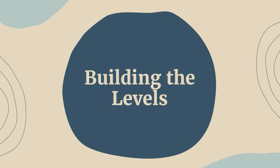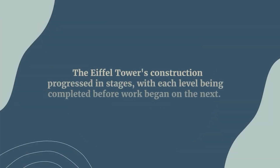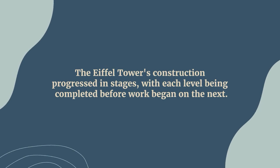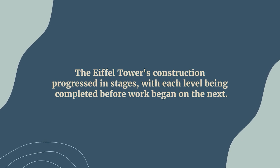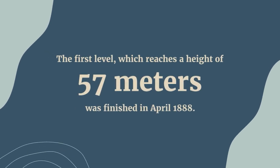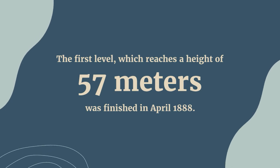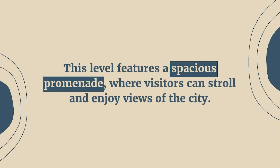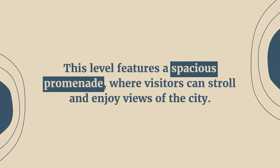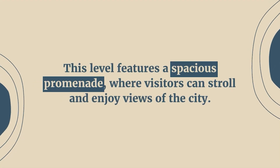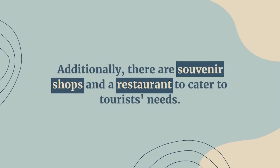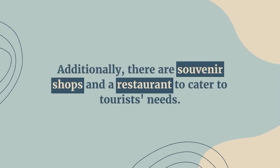Building the levels: The Eiffel Tower's construction progressed in stages, with each level being completed before work began on the next. The first level, which reaches a height of 57 meters, was finished in April 1888. This level features a spacious promenade where visitors can stroll and enjoy views of the city. Additionally, there are souvenir shops and a restaurant to cater to tourists' needs.